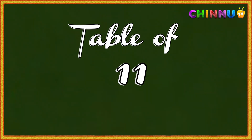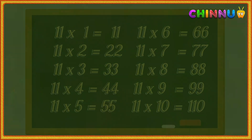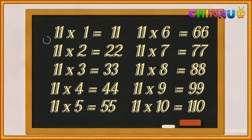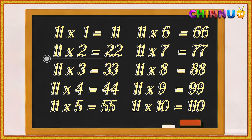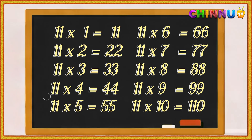Let's learn the table of 11 one more time. 11 ones are 11. 11 twos are 22. 11 threes are 33. 11 fours are 44.